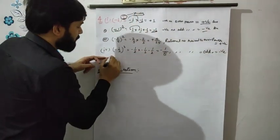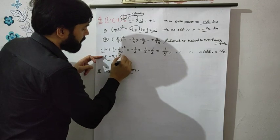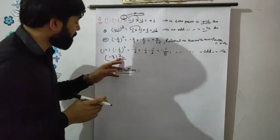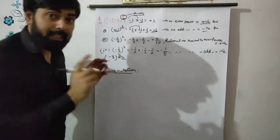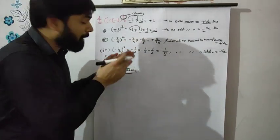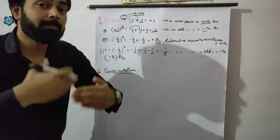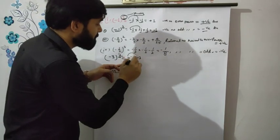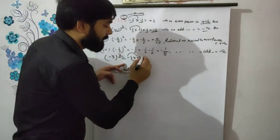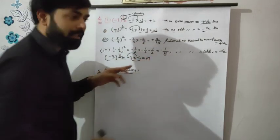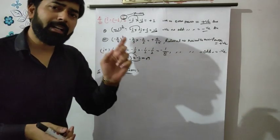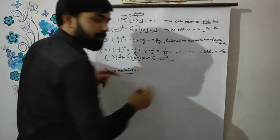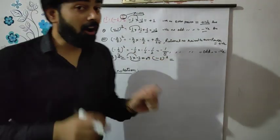For example, minus 3 to the power 2: here minus 3 is a negative integer and power 2 is even. So minus 3 power 2 means minus 3 multiplied 2 times: minus 3 × minus 3. Minus × minus = plus, 3×3=9, so the answer is positive 9. Same for minus 3 to the power 3: power 3 is odd. So minus 3 multiplied 3 times: minus 3 × minus 3 × minus 3. First: minus × minus = plus, 3×3=9. Then 9 × minus 3 = minus 27. So the answer is minus 27.